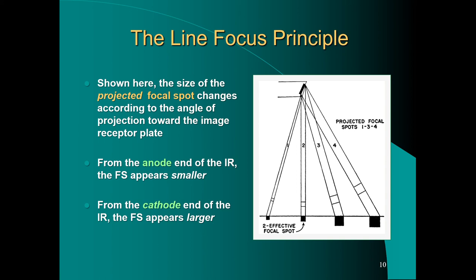You could achieve the least blur from projecting the x-rays from a point source—a source with no actual size—but that's not effectively achievable. The only other way to increase sharpness would be to increase your source to image distance. The line focus principle says that the projected focal spot is going to be smaller than the actual focal spot. The size of the effective focal spot affects image detail, and the smaller the projected focal spot is, the less blur there is at the edge of the images and the greater image sharpness you will have.